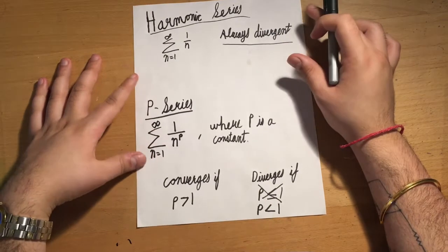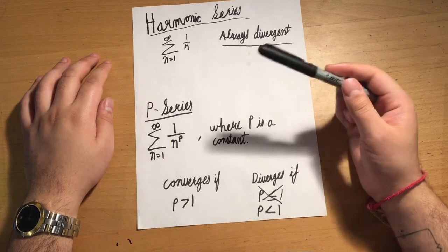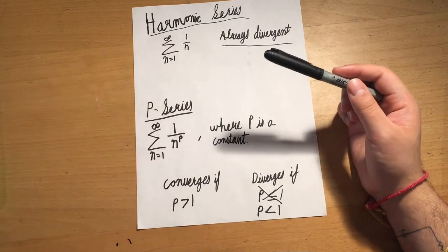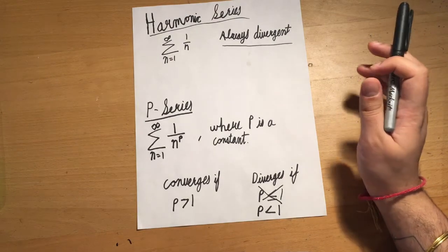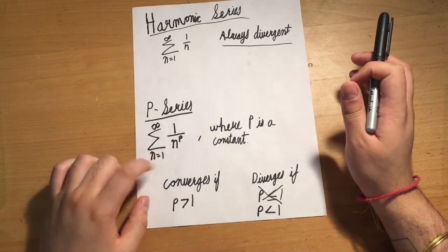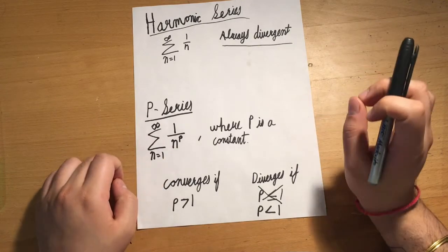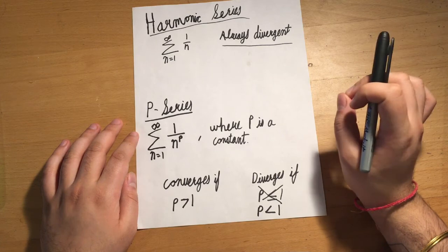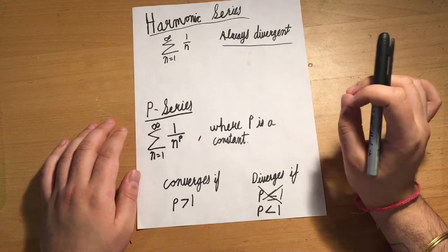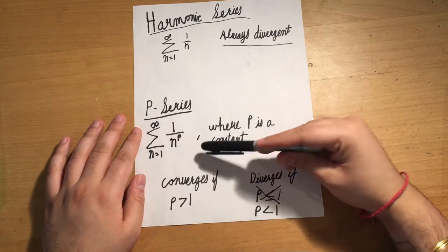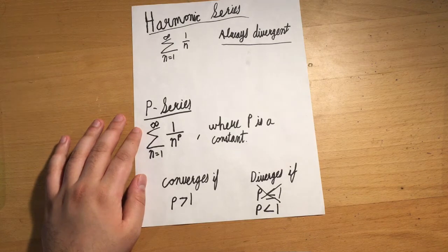A p-series is a series in a very similar form: 1/n^p, where n is the thing being incremented in your infinite series and p is some constant, some real number. If it takes this form, this series converges if p is greater than 1. It will diverge if p is less than 1. And if p equals 1, it's no longer a p-series—it is a harmonic series, which is always divergent.